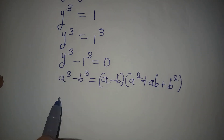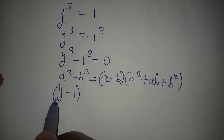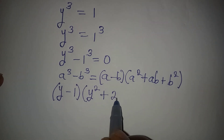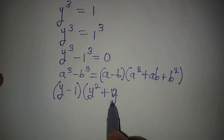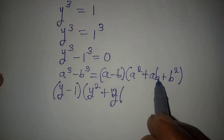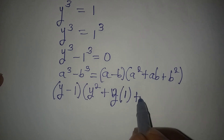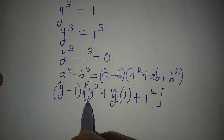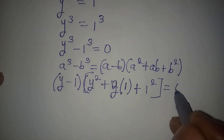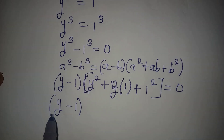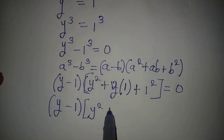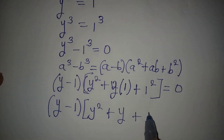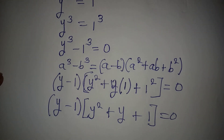These expressions are the same, so we bring this into the factored form. Our a is y and b is 1, so we write y minus 1 as the first factor. The second factor is: a squared is y squared, plus a times b which is y times 1 giving y, plus b squared which is 1 squared giving 1. So we have y minus 1, multiplied by y squared plus y plus 1, equal to 0.